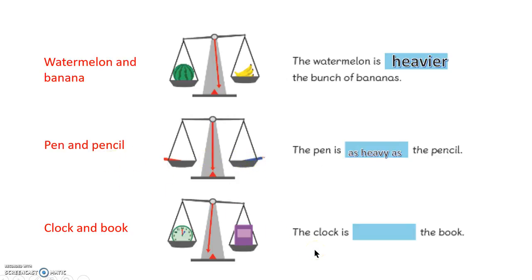The clock and the book - the clock is lighter than the book, as the clock on this scale goes higher up than the book.